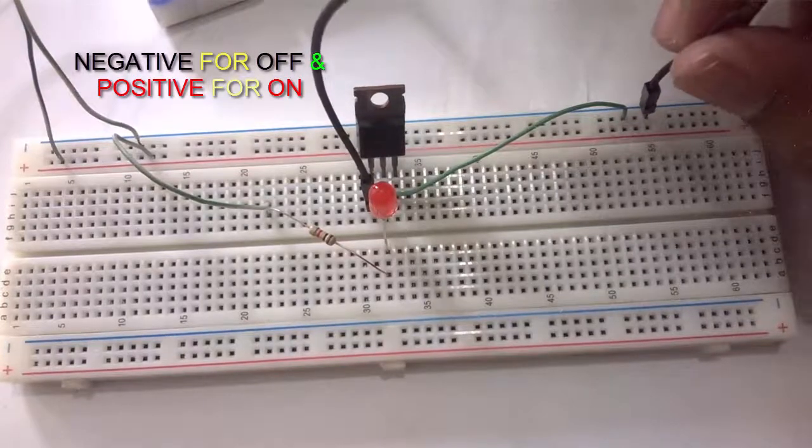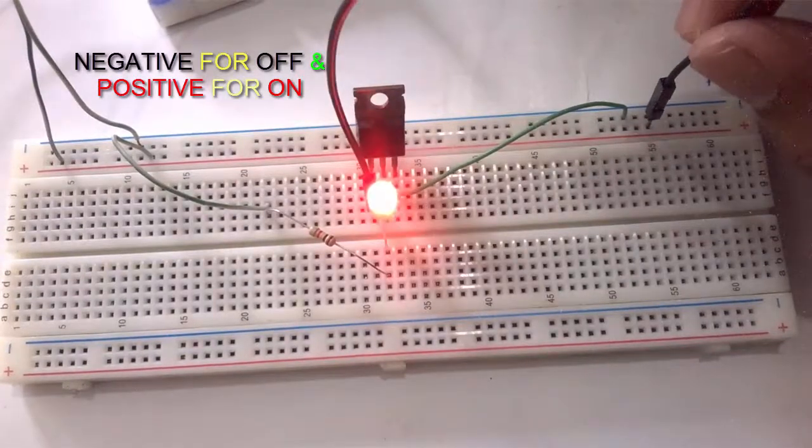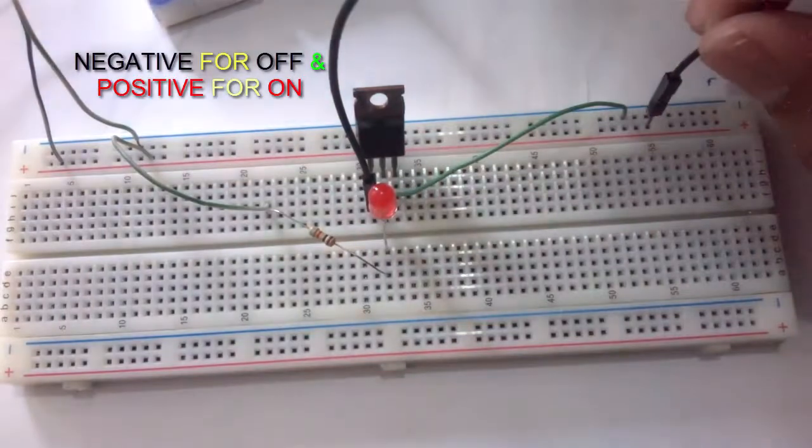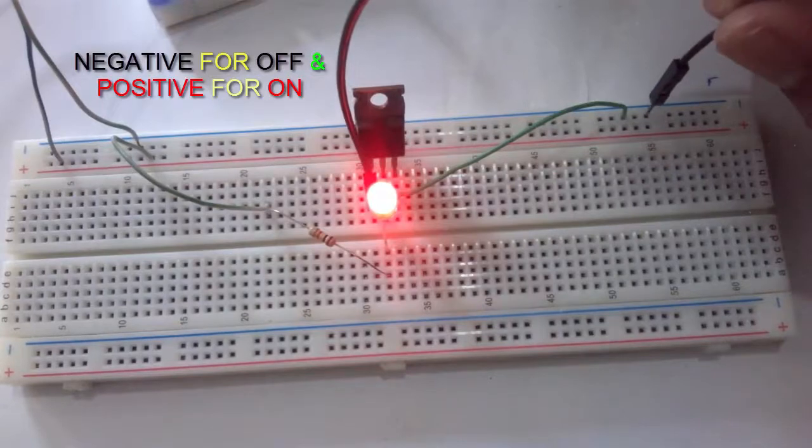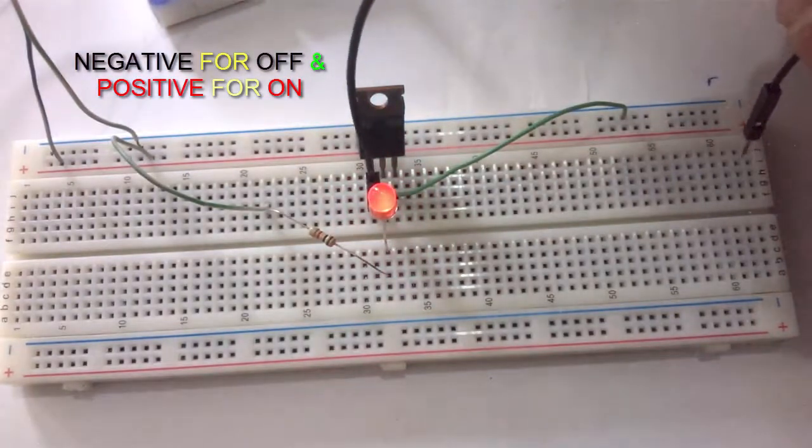To turn OFF the MOSFET, we need to connect in negative. In positive voltage, the MOSFET is ON. In negative, the MOSFET is OFF.